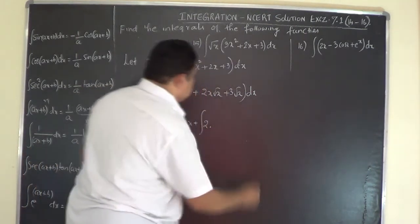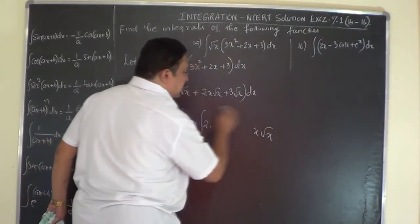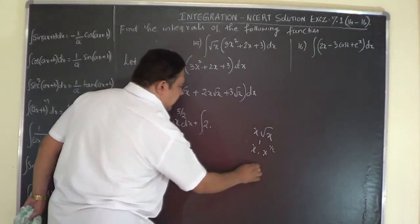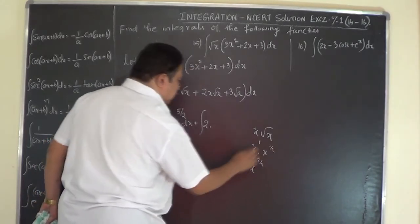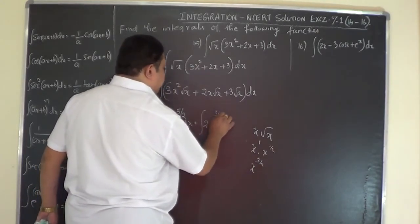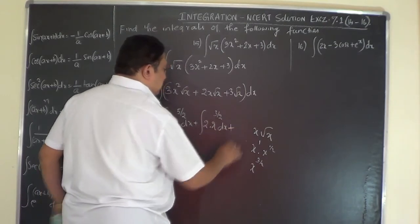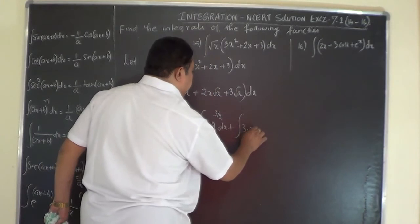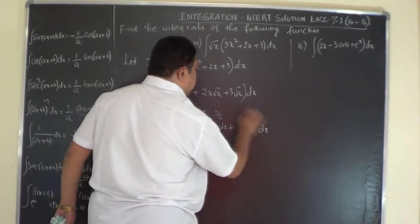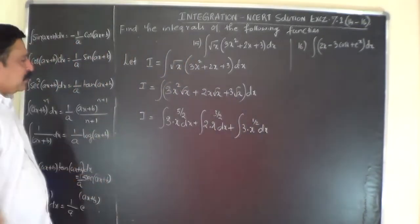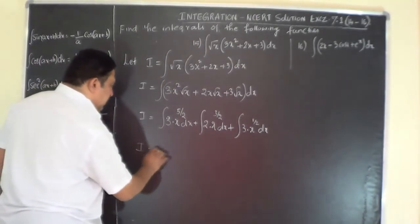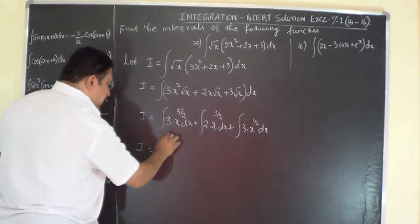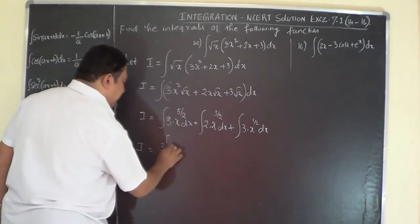How much is x·√x? As in the previous problem, x to the power of 1 into x to the power of half, that is x to the power of 1 + 1/2, which is 3/2. So we have plus ∫2 · x^(3/2) dx, plus ∫3 · x^(1/2) dx, because root x is straight away x to the power of half. Now integrate — 3 is constant, keep it outside the integral sign.